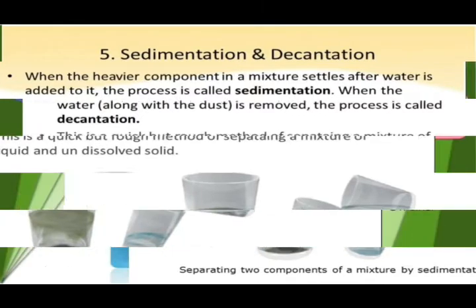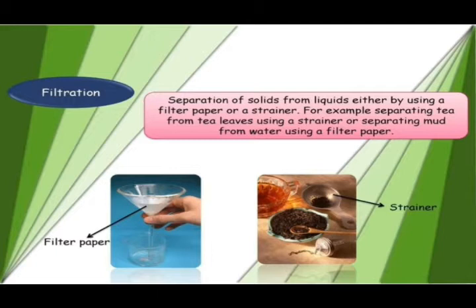The sixth method is filtration — the separation of solid from liquid either by using filter paper or a strainer. In filtration, we separate any substance from liquid using filter paper and a strainer. For example, separating tea from tea leaves using a strainer, or separating mud from water using filter paper.